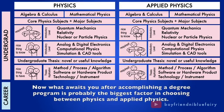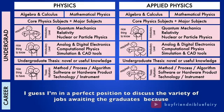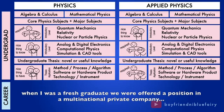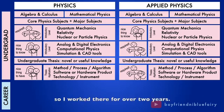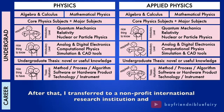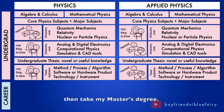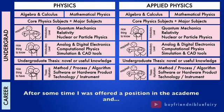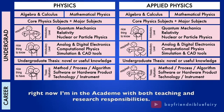What awaits you after accomplishing a degree program is probably the biggest factor in choosing between physics and applied physics. I guess I'm in a perfect position to discuss the variety of jobs awaiting the graduates because when I was a fresh graduate, we were offered a position in a multinational private company. So, I worked there for over two years. After that, I transferred to a non-profit international research institution and then take my master's degree. After some time, I was offered a position in the academy and right now, I'm in the academy with both teaching and research responsibilities.